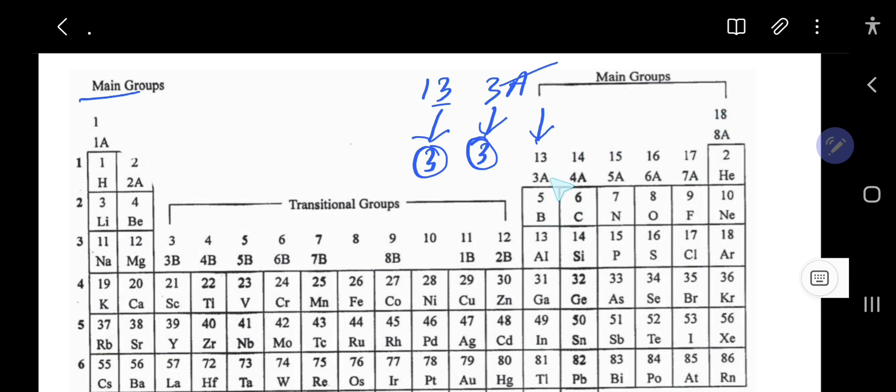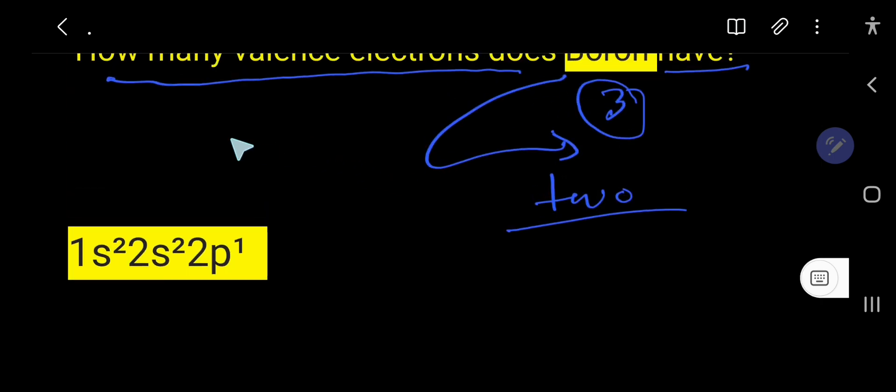Now to find out the valence electrons of boron from the electron configuration, we need to know the atomic number. Atomic number of boron is 5.